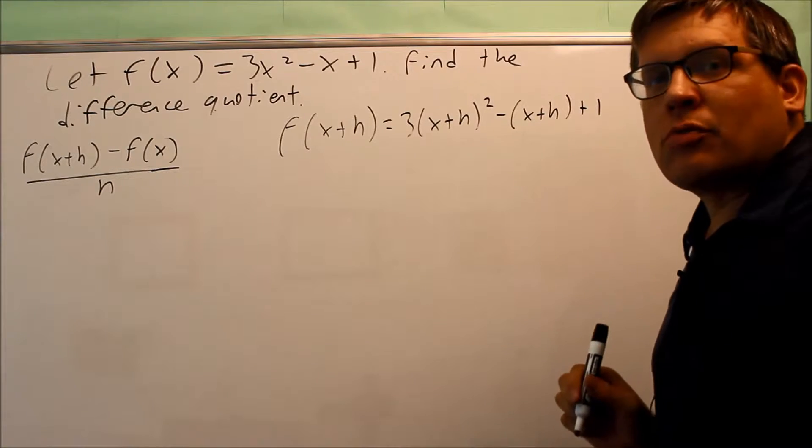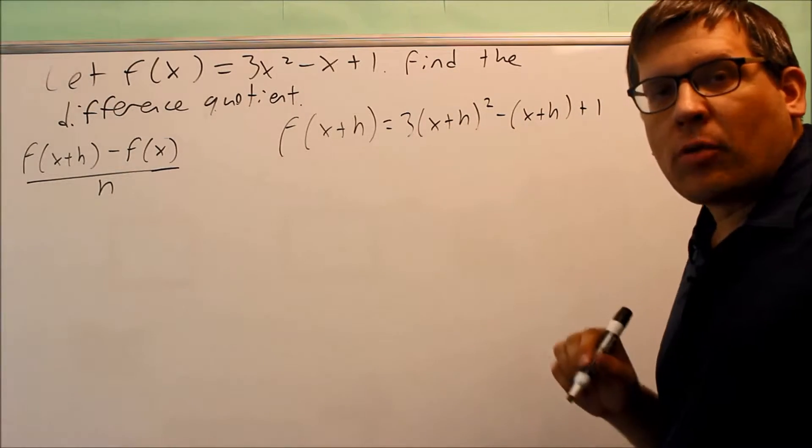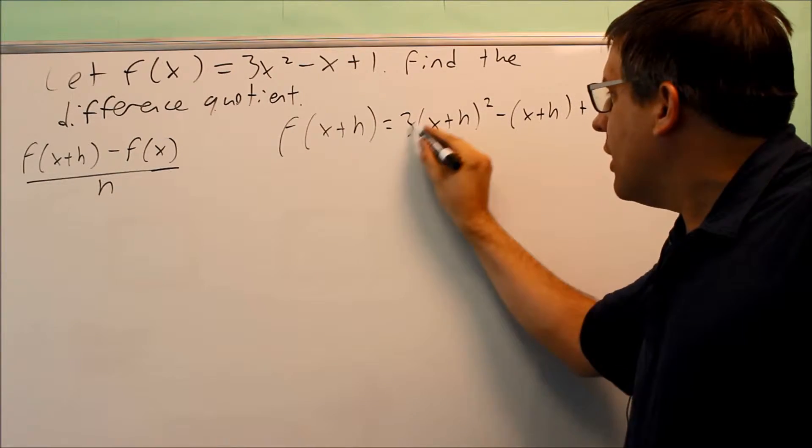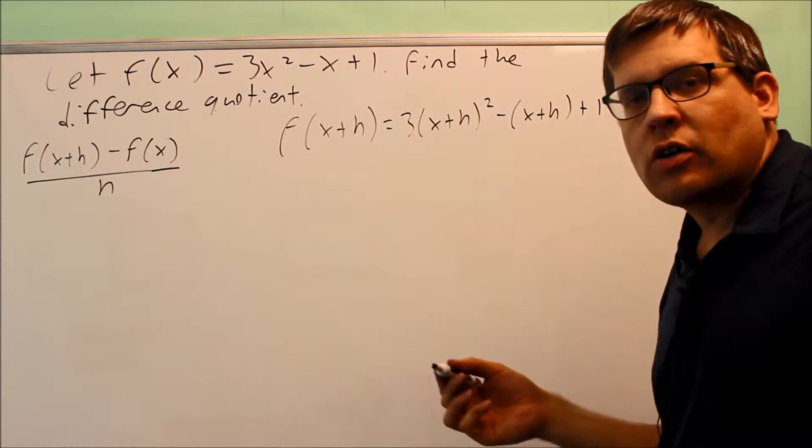So now I need to simplify this. We want to make sure we follow the correct order of operations for this. So we're not allowed to take 3 into the parenthesis because order of operations says we have to do the square first.